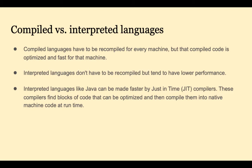Interpreted languages have found ways to make the code faster. For example, Java has the just-in-time compiler as part of the Java virtual machine. This will find blocks of code that are run repeatedly and optimize them for native code on that machine. Other interpreted languages get speed-ups by having libraries written in faster languages like C or C++.